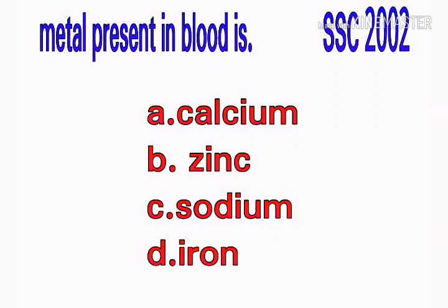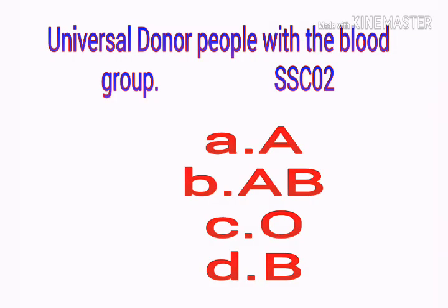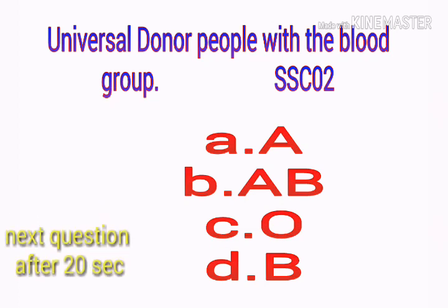Which metal is present in blood? Options: a) calcium, b) zinc, c) sodium, d) iron. Your answer is iron.